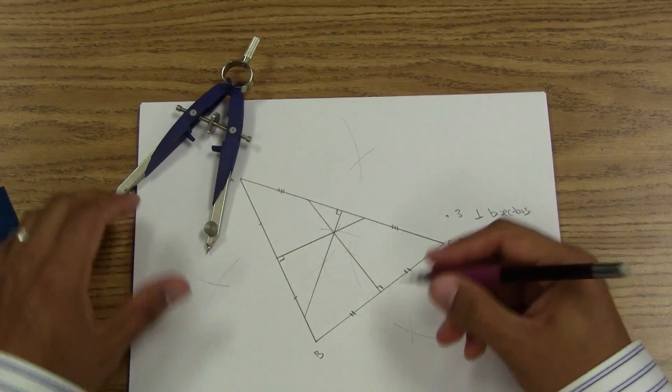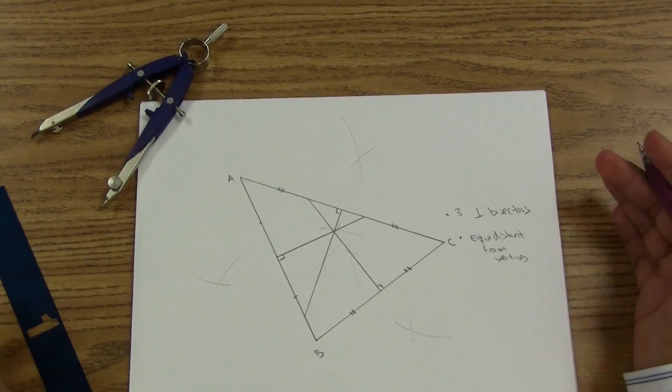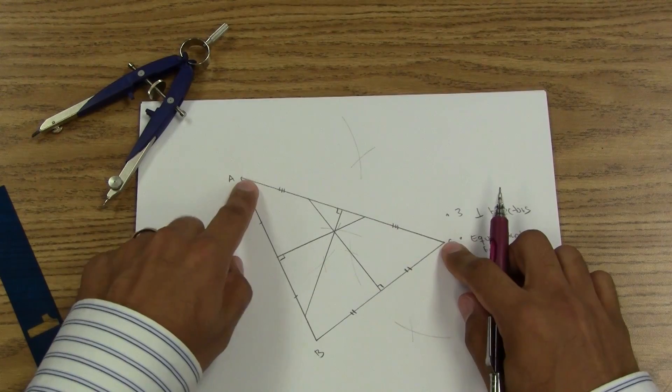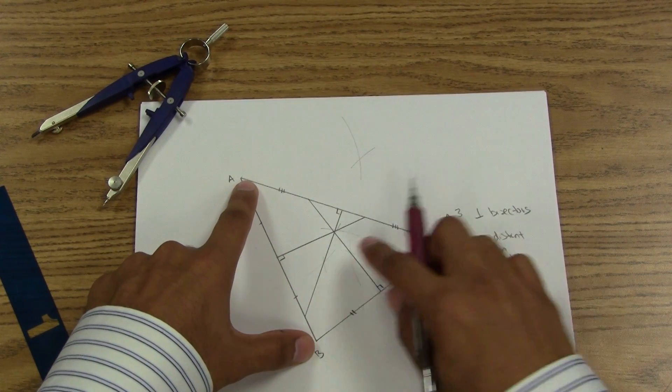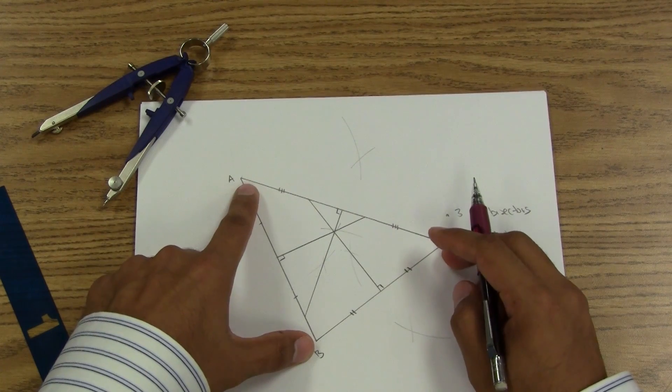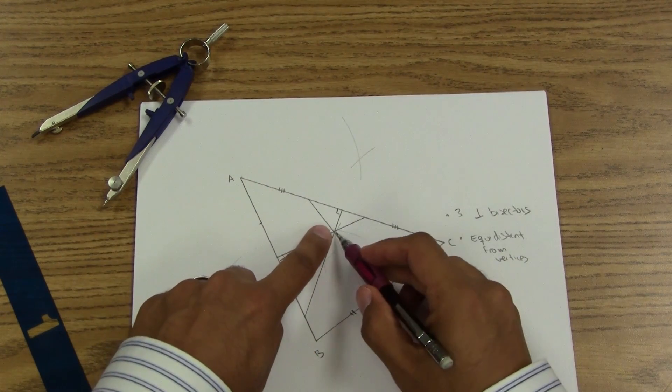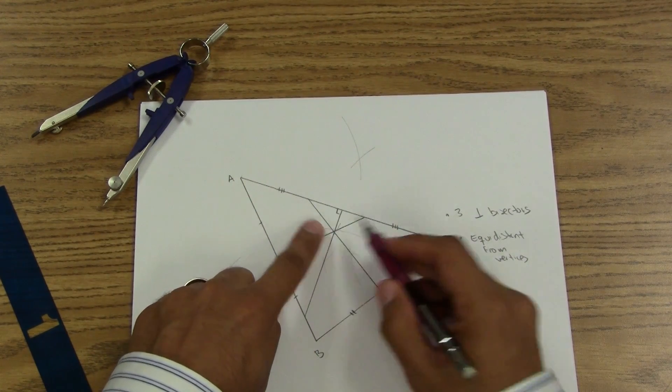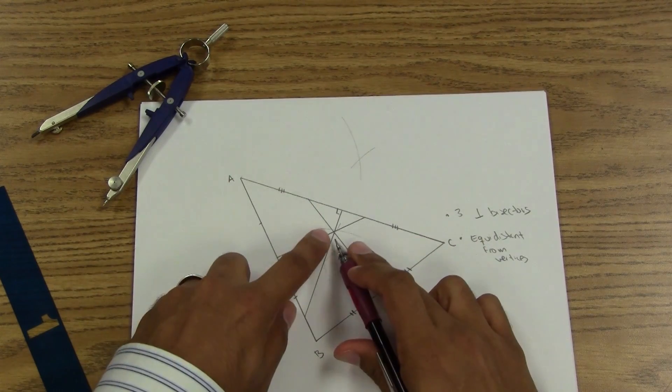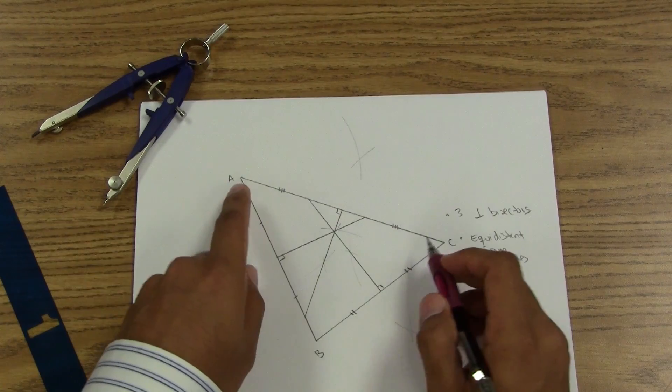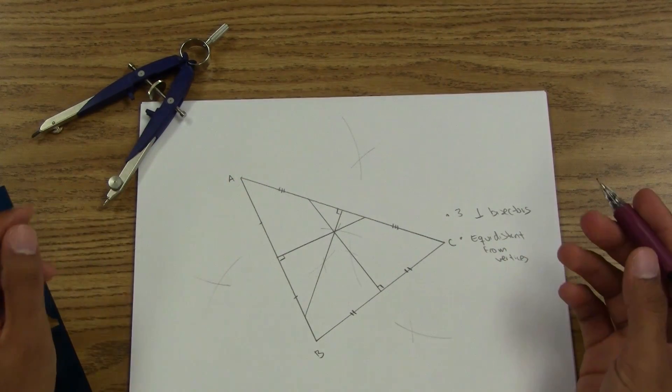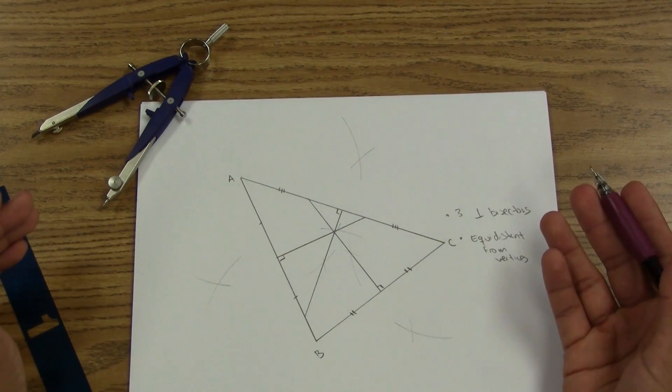So equidistant from the vertices. A scenario here would be something like you have three teams and you have an objective in the middle, and they need to run to the middle and you want to make it fair. You want everybody to be the same distance from your objective.